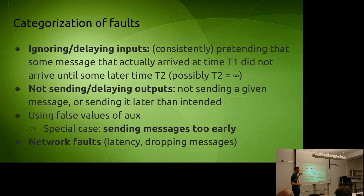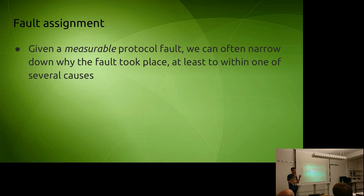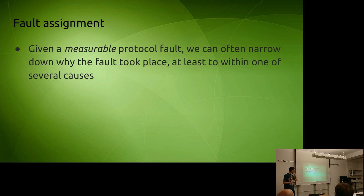Those are all individual faults. We also have network faults, which are basically latency or dropping messages. Fault assignment: if we have a measurable protocol fault — where there is clear cryptographic evidence that a fault happened, for example two blocks built on top of the same parent in a proof-of-work blockchain — we can often narrow down why the fault took place, at least to within one of several scenarios.